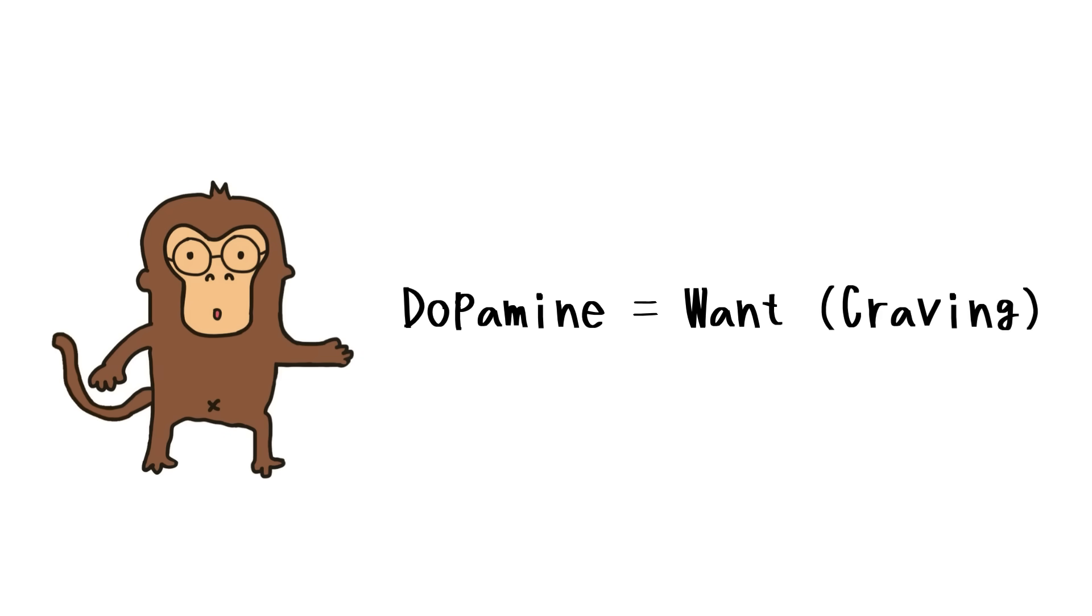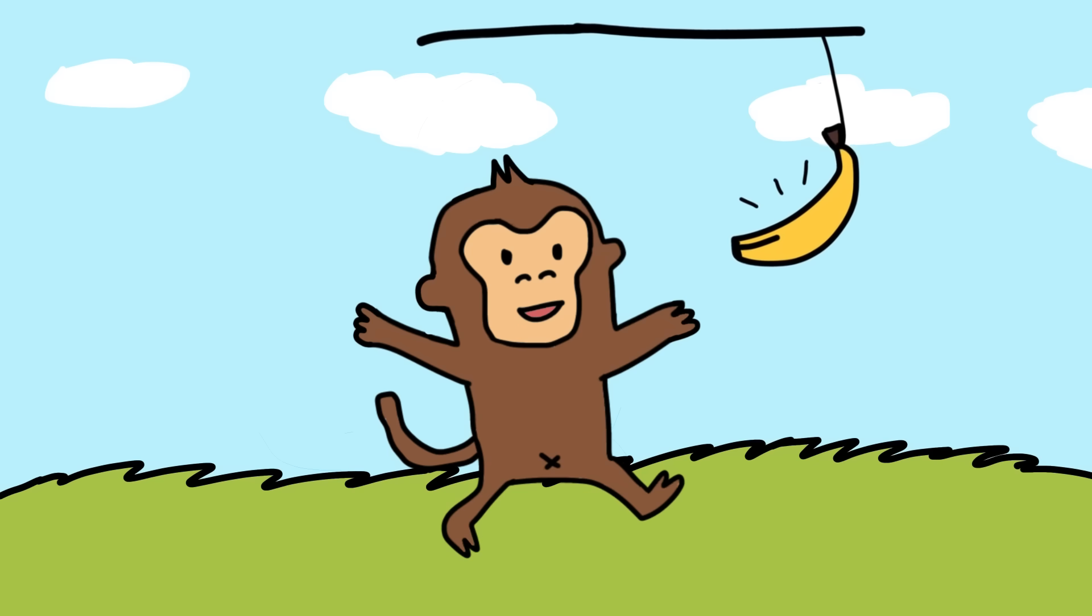Dopamine is the invisible banana dangling in front of Monkey's face. Monkey hasn't even eaten the banana yet, but the mere thought of it gets him running.